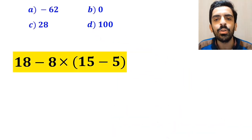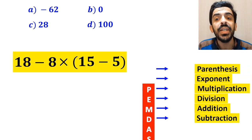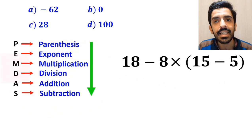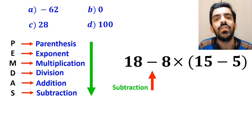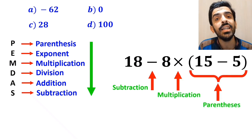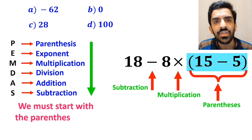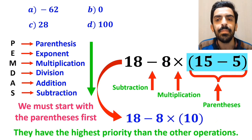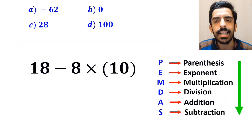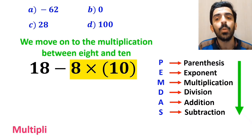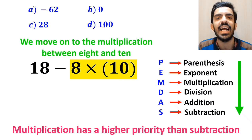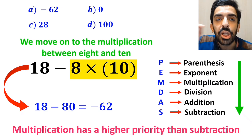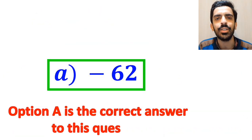Now let me show you how to solve this expression correctly. To solve this question, we need to follow the rule called PEMDAS, which shows us the priority of the order of operations. As you can see in the image, in this expression we first have a subtraction sign, then a multiplication sign, and finally parenthesis. We must start with the parenthesis first, because they have the highest priority among all the operations. So we can rewrite this expression as 18 minus 8 multiplied by 10. In the next step, we move on to the multiplication between 8 and 10, because multiplication has a higher priority than subtraction. So we write this expression as 18 minus 80, which finally gives us the answer negative 62. Therefore, option A is the correct answer to this question.